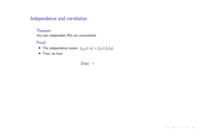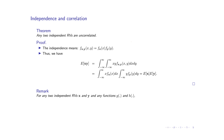To summarize the proof: independence means you can decompose the joint PDF. The mean of xy can be written as a double integral, this double integral can be decomposed into a product, and therefore the proof is complete. Furthermore, if x and y are independent, then any function g(x) and any function h(y) are also independent, which means these two new random variables are also uncorrelated.